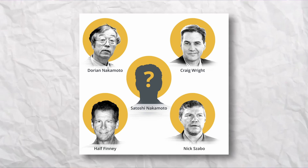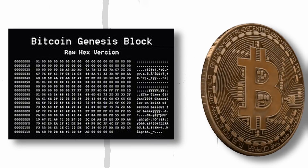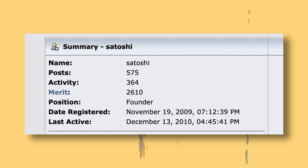Fun fact number three: no one knows who created Bitcoin. This is one of the most exciting mysteries of our time. Little is known about the person or group going by the name Satoshi Nakamoto, which is widely believed to be just an alias. In October 2008, Satoshi Nakamoto published a paper titled 'Bitcoin: A Peer-to-Peer Electronic Cash System.' For the next two years, the Satoshi Nakamoto persona appeared heavily involved in the early days of Bitcoin's creation. However, in December 2010, the last message from Satoshi was posted on the Bitcoin forum.